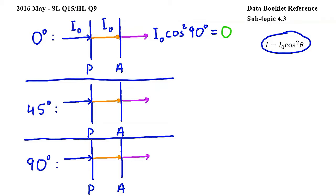Let's see what happens when theta is 45 degrees. The intensity of light entering P is I0. However, since the light entering P is horizontally polarized while the axis of polarization of P is now at 45 degrees to the horizontal, the light emerging from P will have half of the intensity of the light entering P, which means it will be one half I0. Substituting into the equation from the data booklet, we get one half I0 times cosine squared 45 degrees, as the angle between the polarization axes of P and A is 45 degrees.